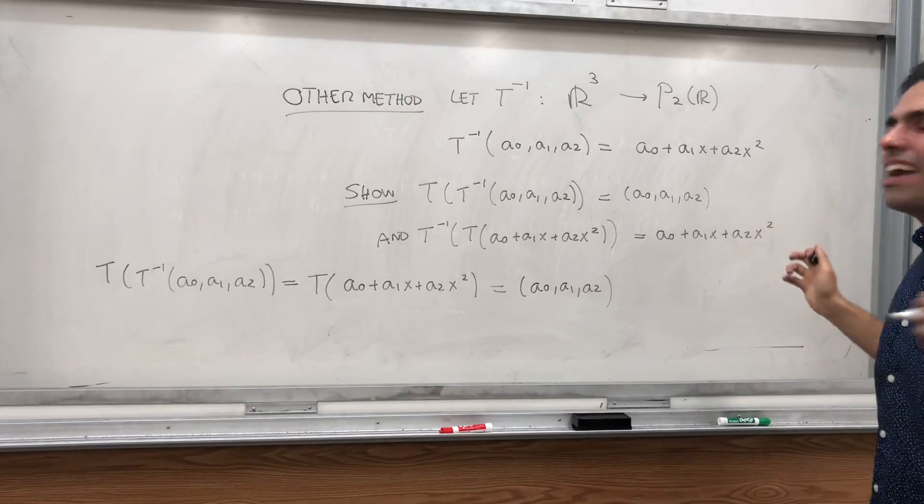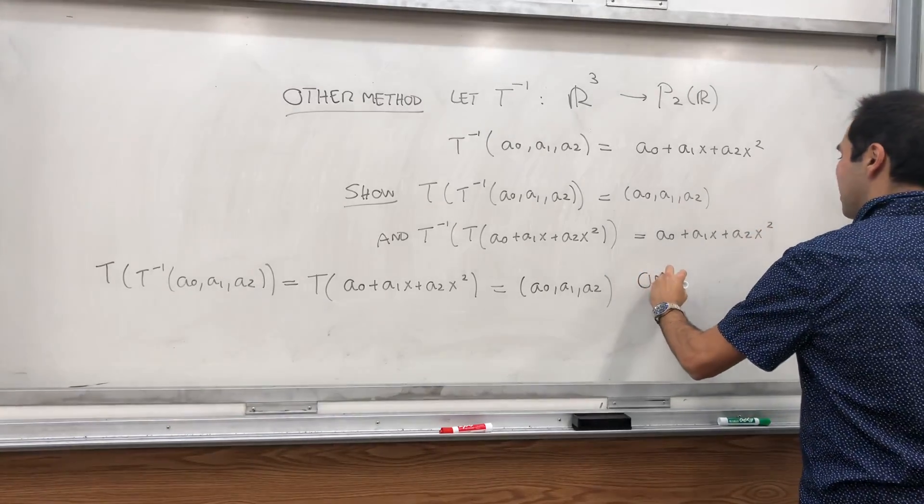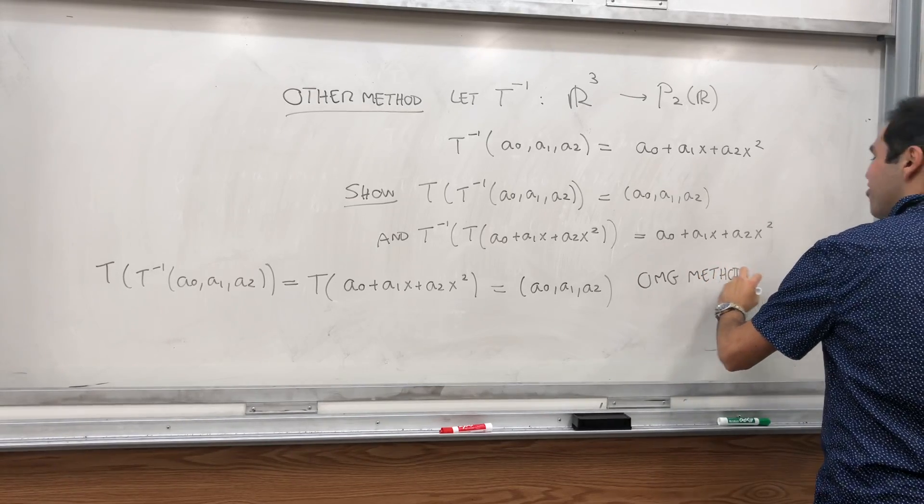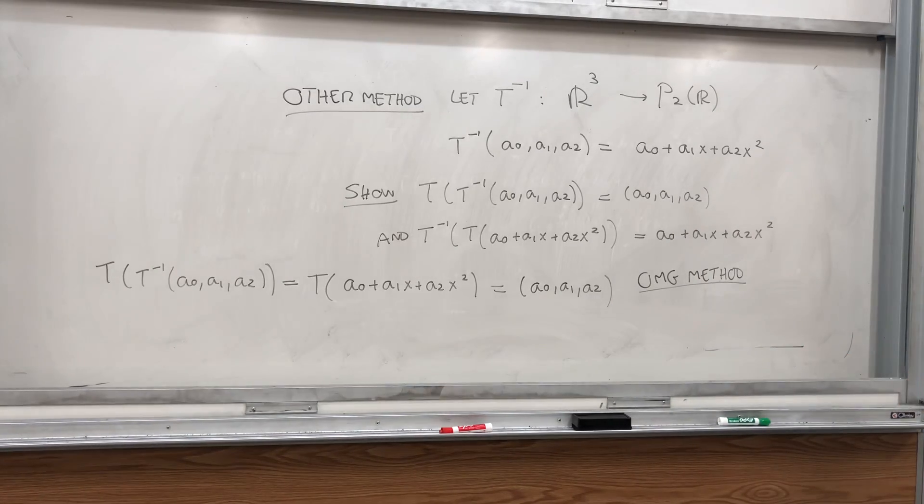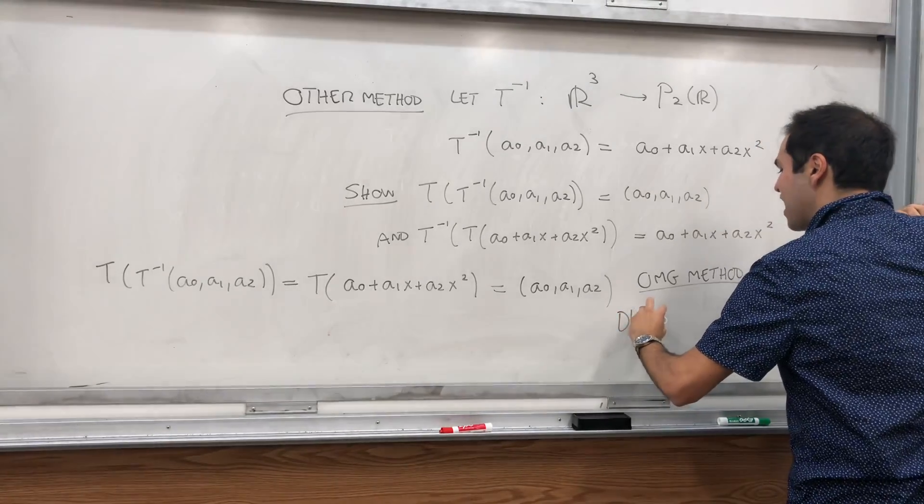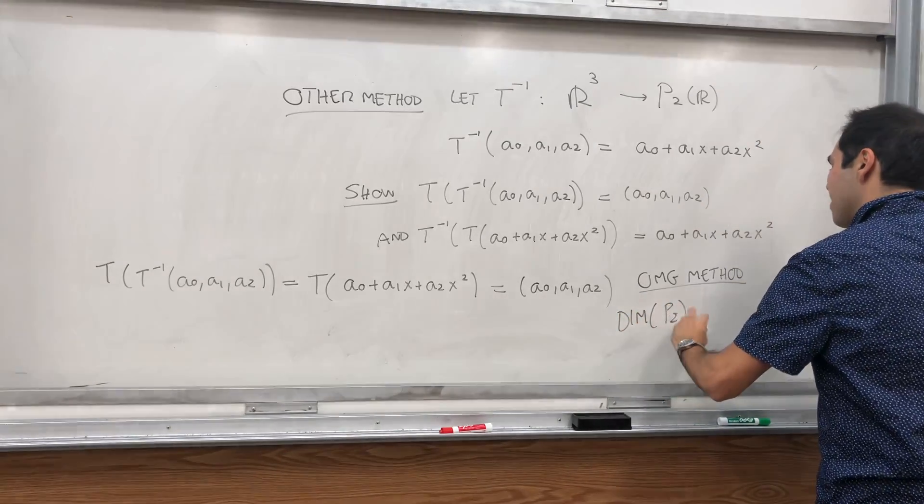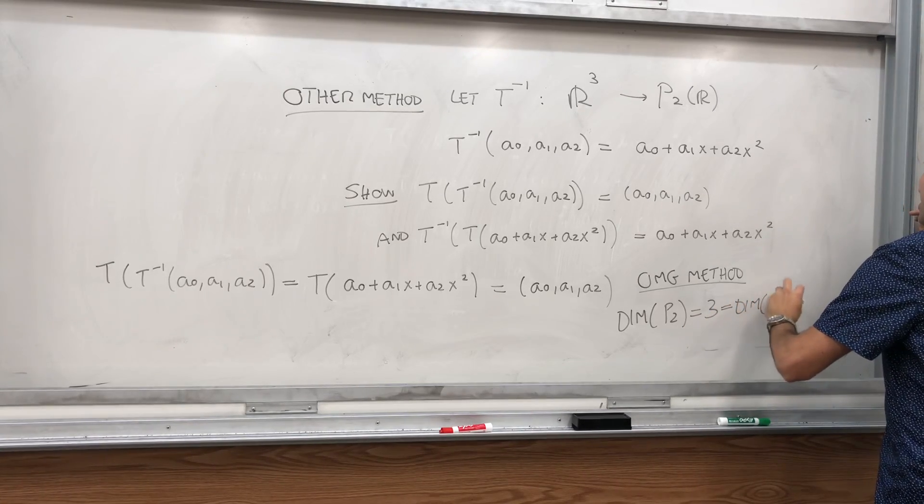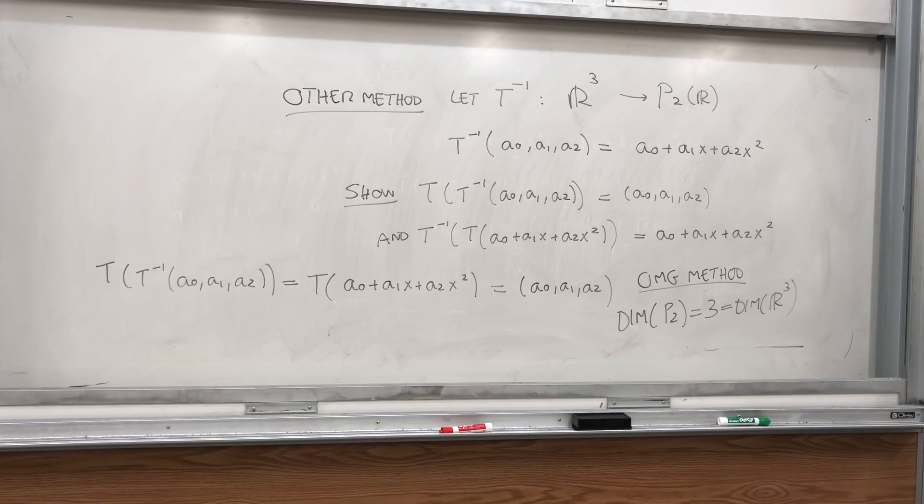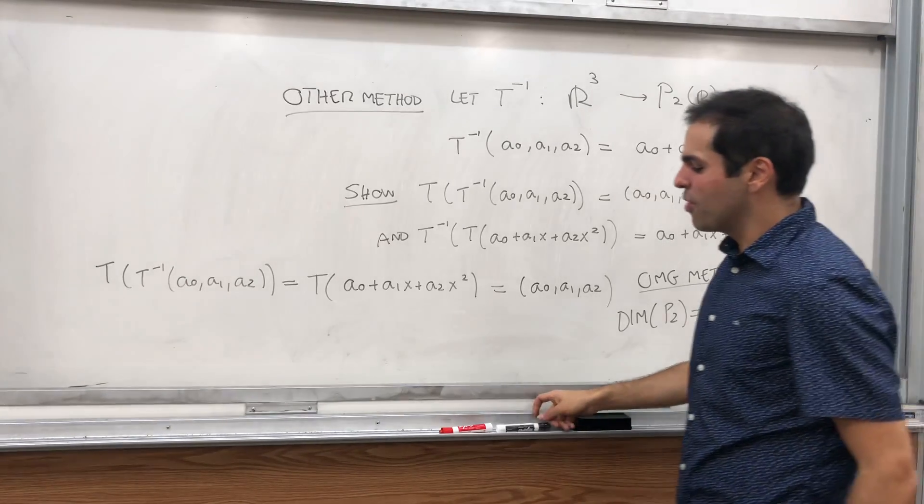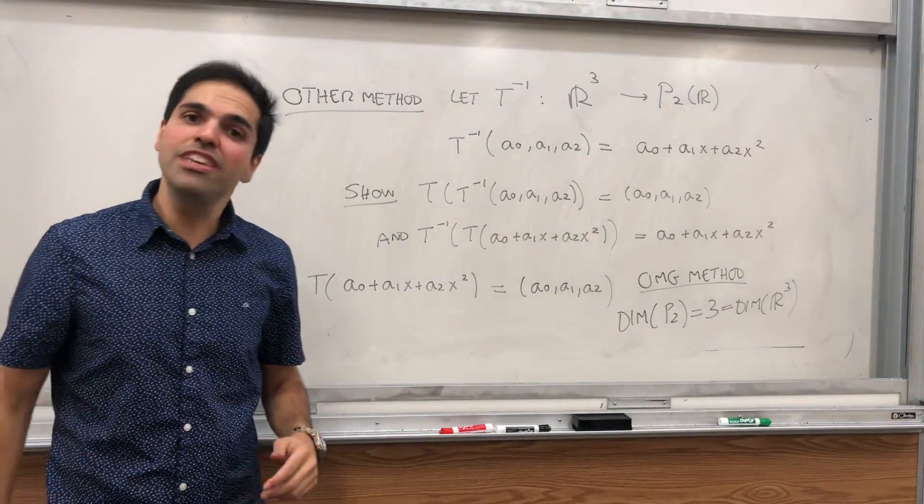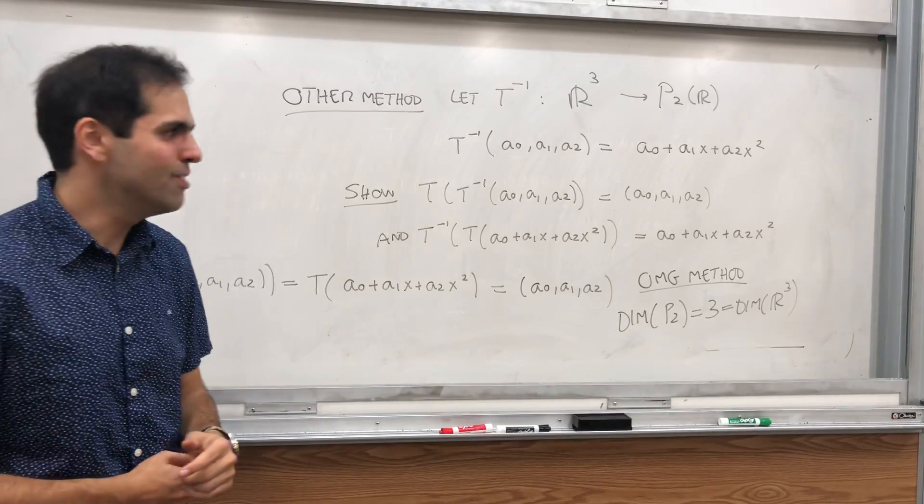Lastly, what I want to say, there's actually an oh my god method. How do you know that they're isomorphic without even finding an isomorphism? Simply because the dimension of P2 is 3, which is the dimension of R3. So it turns out for finite dimensional vector spaces, if the dimensions are the same, then they're isomorphic. And in fact, there will be a video on proving this fact, and it's absolutely beautiful.